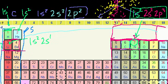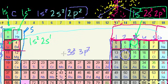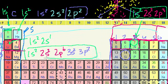For silicon, in the third period, we're in the second row of the p block, so we start with 3p2. Then 3s2. Then the full 2p block fills as 2p6, then 2s2, then 1s2. Silicon's full configuration is 1s2, 2s2, 2p6, 3s2, 3p2. Verifying: 2 + 2 + 6 + 2 + 2 = 14 electrons, matching silicon's atomic number of 14.